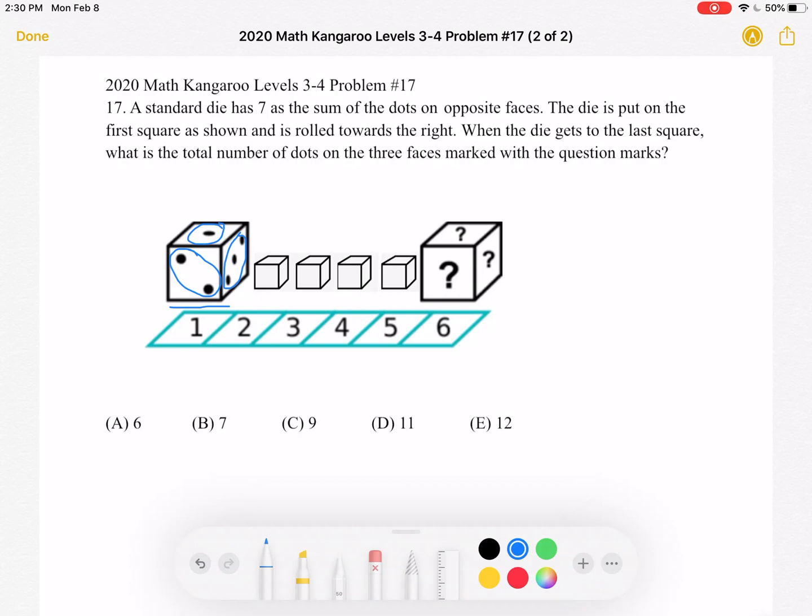So let's try to figure out what the sides we can't see are. The side that's right here, hidden on the left, must have 4 because it's opposite the side on the right with 3. And again, a standard die has 7 as the sum of the dots on opposite faces. We also know that the bottom face that is hidden must have 6 because it's opposite the top face with 1.